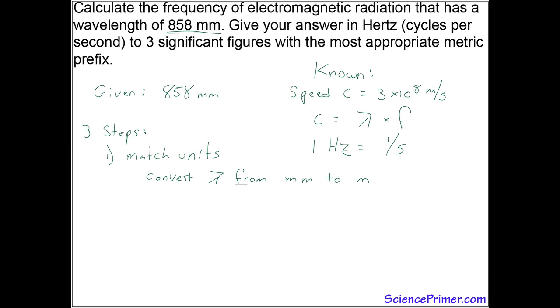Once we have that conversion done, we have both the speed and the wavelength in the base unit meters, and then we'll use the equation to find frequency. Once we have frequency, we'll have that value in per second or hertz, and then we'll need to figure out the best or most appropriate metric prefix to provide the answer.